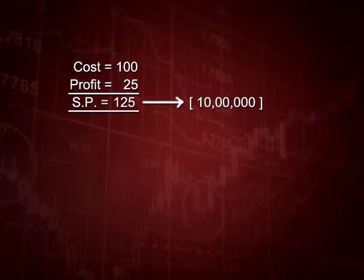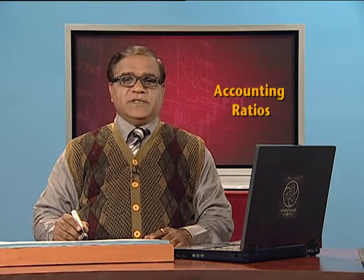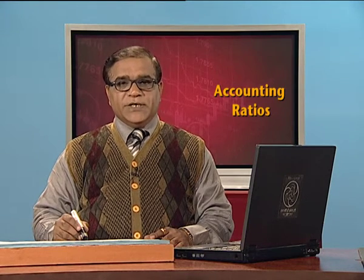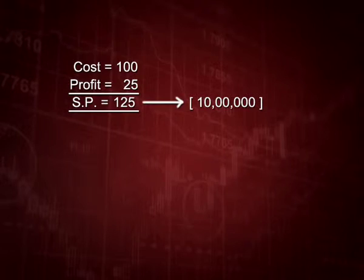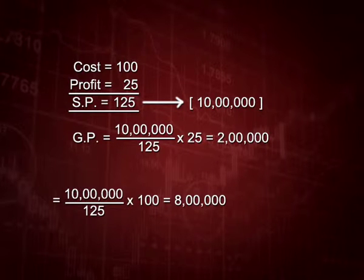Now, 10 lakh is the selling price, which equals 125 percent. To find the gross profit (25 percent), we use the unitary method: 10 lakh divided by 125, multiplied by 25, giving us 2 lakh as the answer. If asked for cost of goods sold, divide 10 lakh by 125 and multiply by 100, which gives 8 lakh rupees.